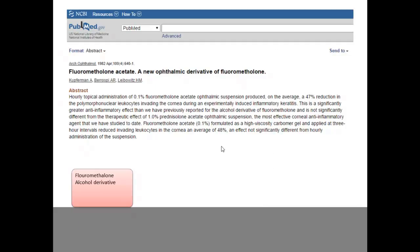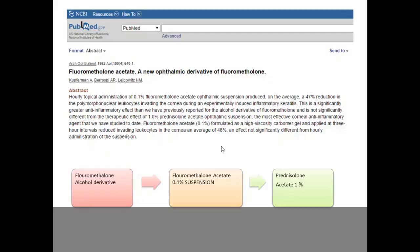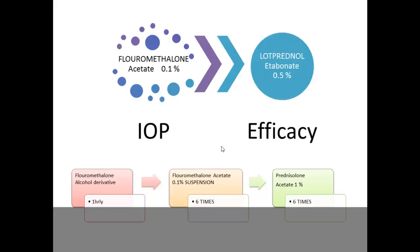Regarding which steroid to use: studies show that fluorometholone acetate 0.1% suspension given six times has good efficacy compared to prednisolone acetate 1% six times. Studies also compare fluorometholone with loteprednol and find them equally efficacious in terms of IOP and efficacy, though some studies claim loteprednol has slightly more IOP elevation than fluorometholone. Personally, I prefer fluorometholone.